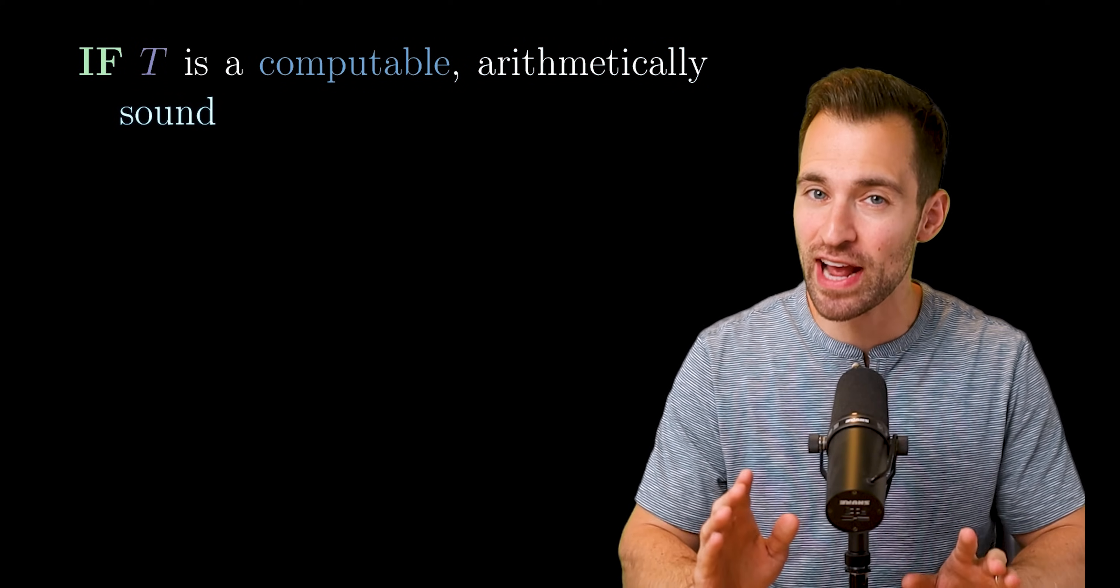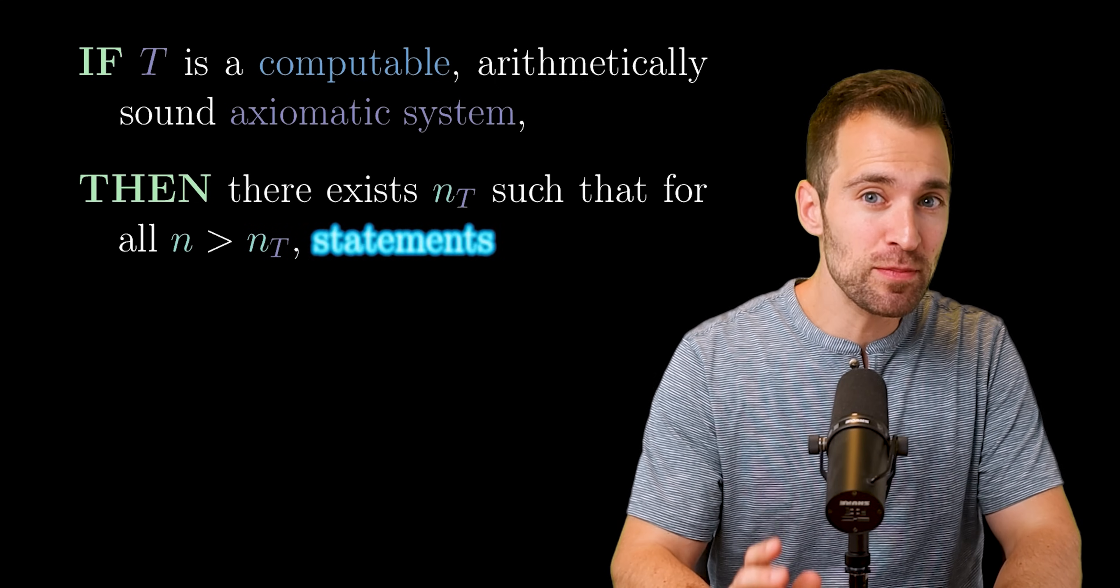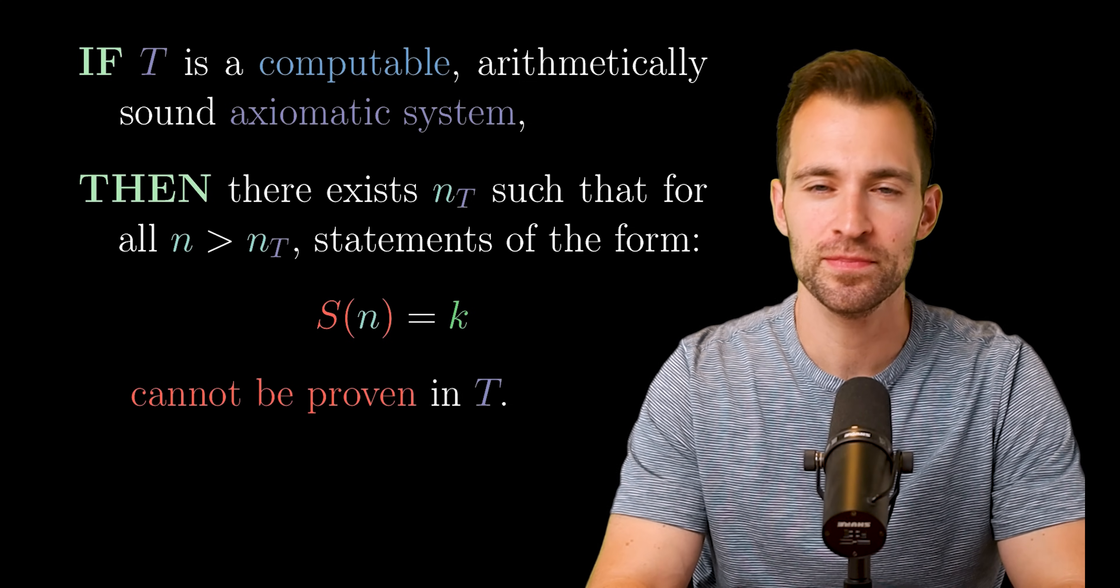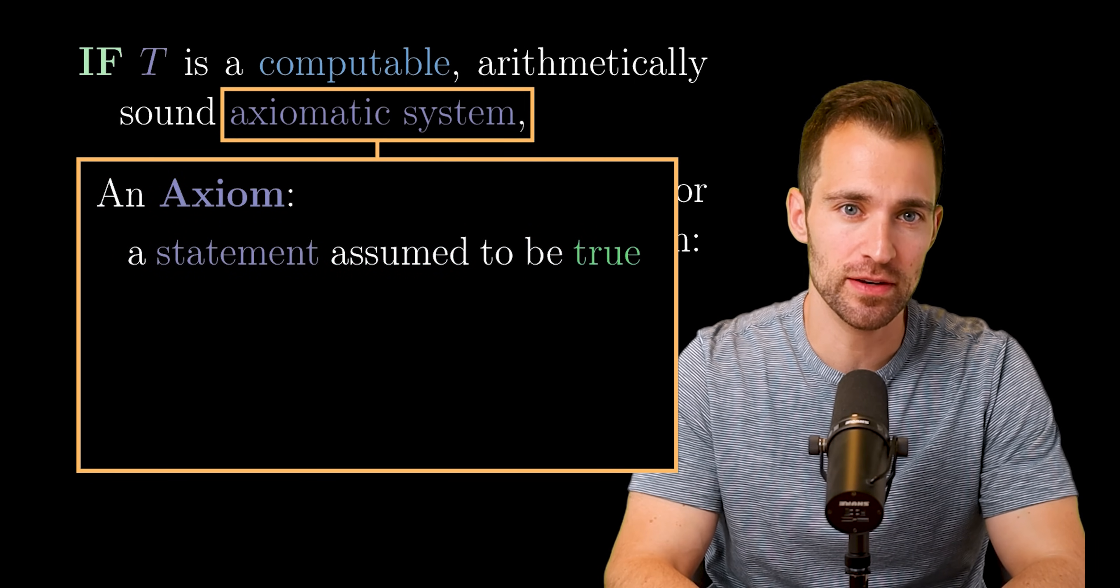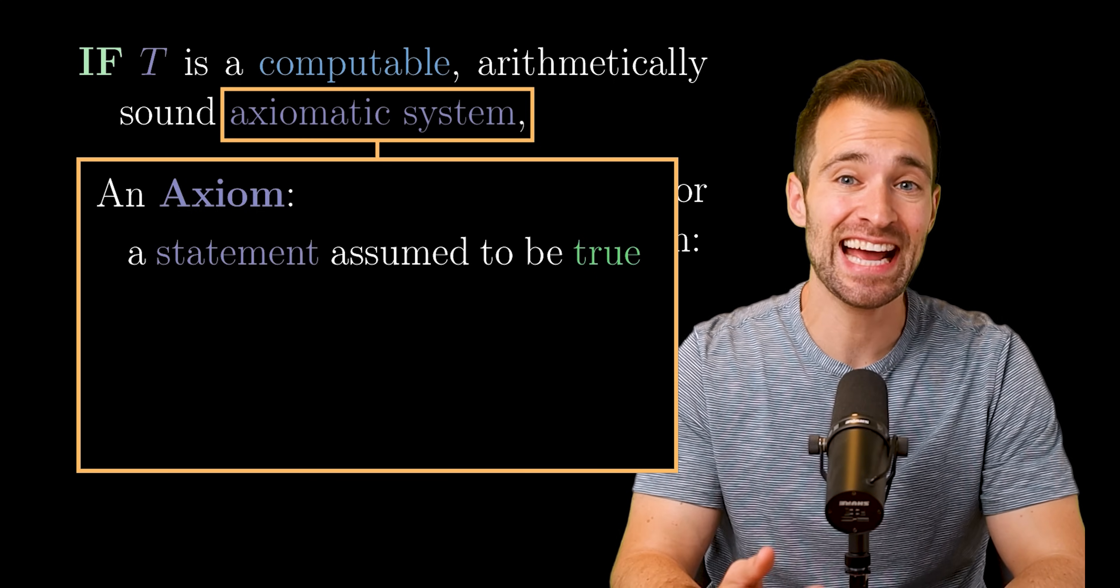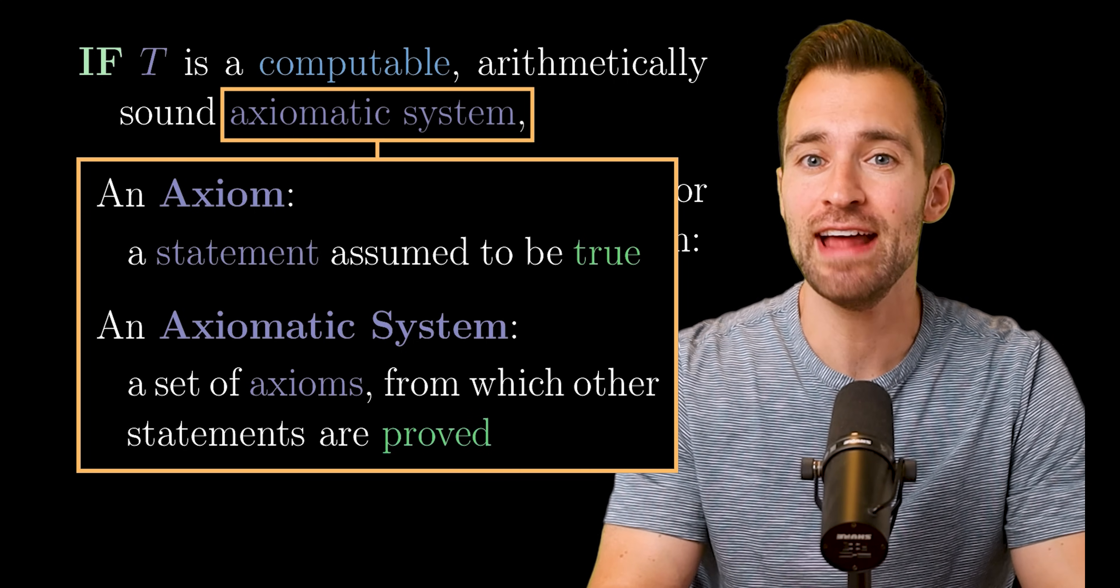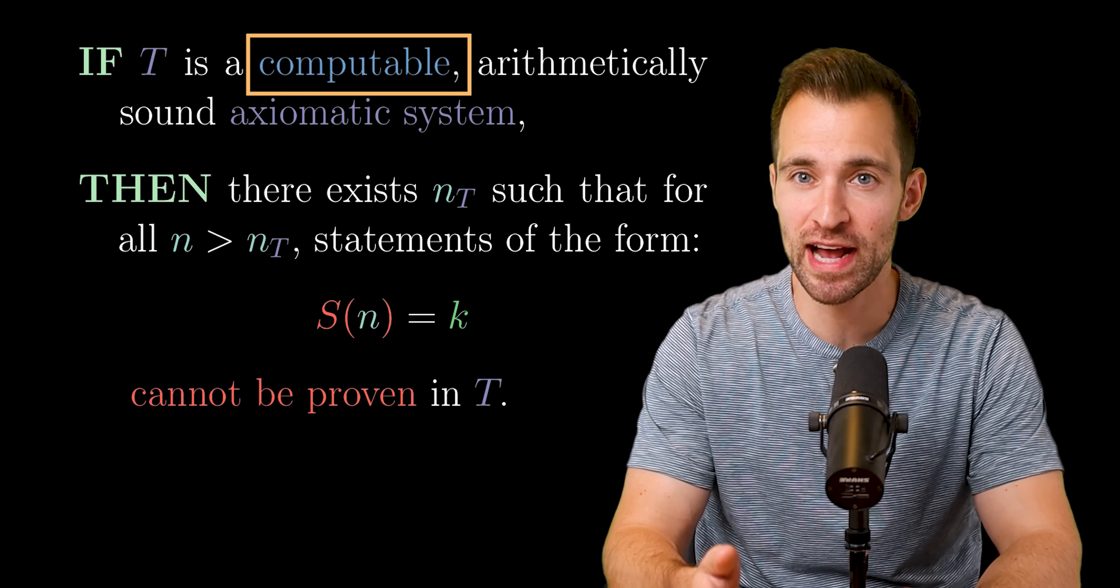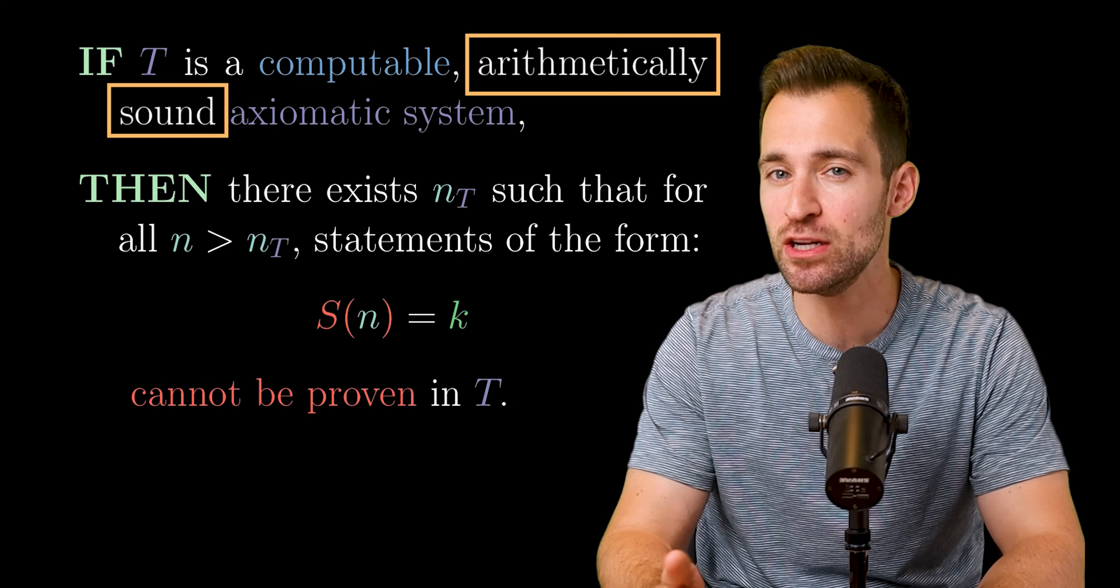Now I want to end the video here, but I can't because we have an incoming asteroid of a theorem. If T is a computable, arithmetically sound axiomatic system, then there exists an integer n_T such that for all n greater than n_T, statements of the form S(n) equals some number k cannot be proved in T. We saw this last time, but let's dig in. To understand an axiomatic system, we define an axiom, which is a statement assumed to be true and is generally considered self-evident. For example, every number equals itself. Next, an axiomatic system is a set of axioms from which other statements are proved. And this is how pure mathematics normally proceeds. Some things are assumed and then theorems are deduced from them.